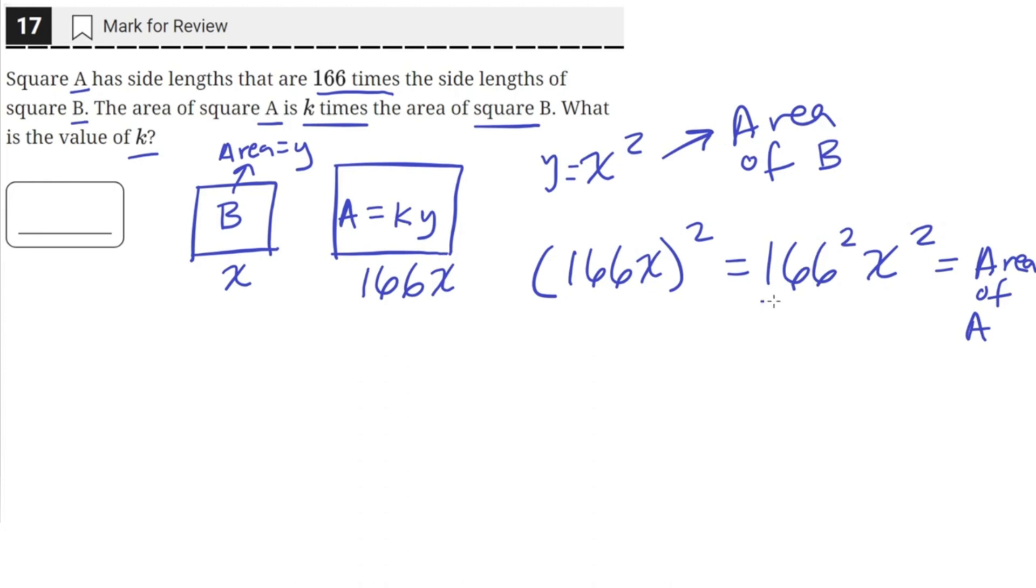So if we find the value of this constant, 166 squared, the x squared is in both. And so this is just the value of k. This will be the coefficient of x squared, which is the area of B.